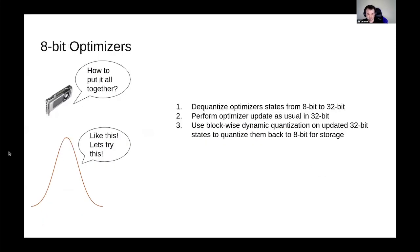With this recipe, they could put it all together, the 8-bit optimizers. It works like this. You first start with your 8-bit optimizer states initialized at zero. Then you dequantize them to 32-bit, do your update as normal. And once you have your update, you quantize it again to 8-bit for storage. And so with that, we have the entire recipe for 8-bit optimizers.